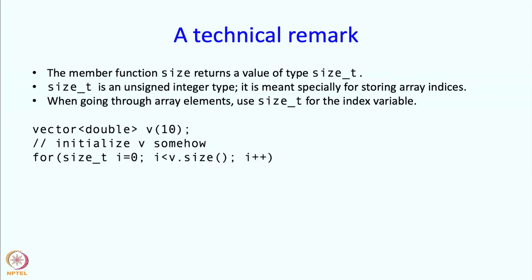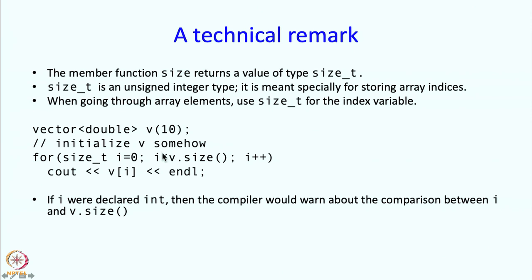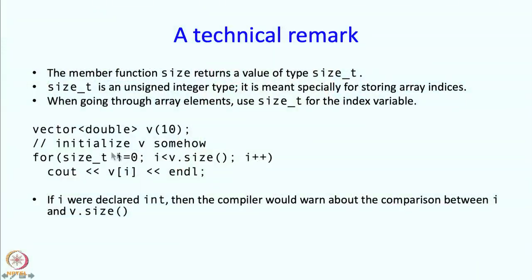Because if you have code like this, where you are comparing the index with v.size, if you had declared this i to be int, then you would be comparing an integer with an unsigned integer. This comparison is something that C++ finds a little bit error prone. Because unsigned integers have that wider range and C++ compiler writers worry that, are you sure you want to do this comparison.